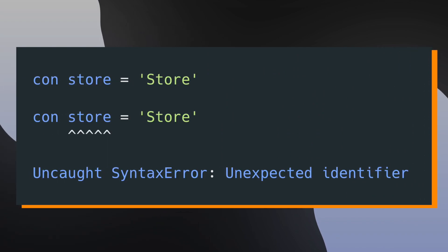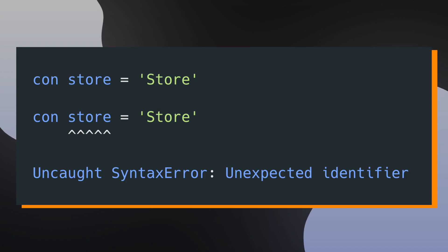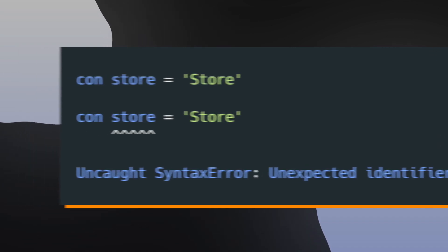Syntax errors are errors that arise from incorrectly writing out syntax for a given programming language. These errors are usually thrown during compile time, so this means that if you find a syntax error, chances are you won't be able to see your application code run until you address that problem.